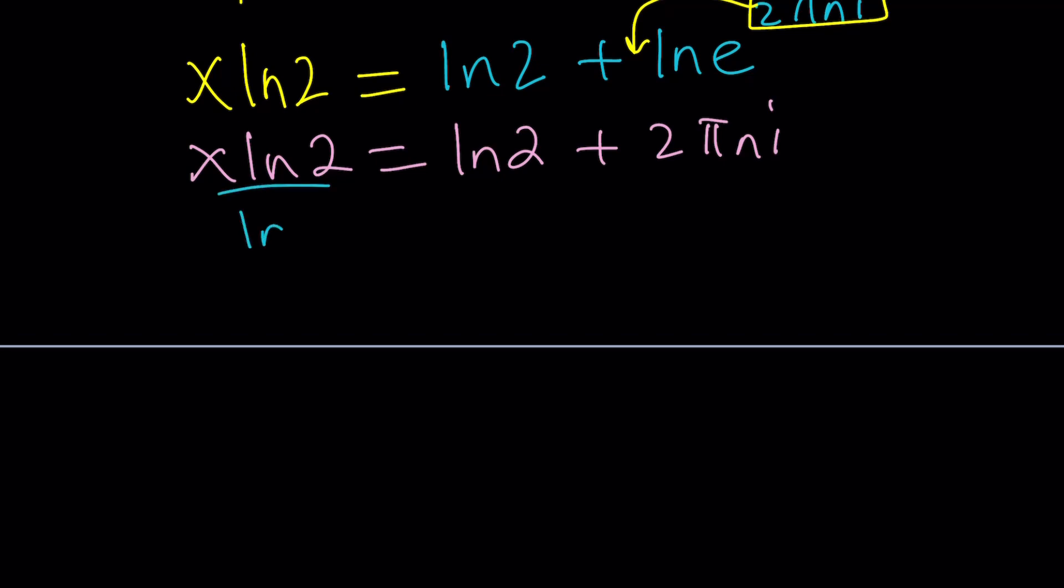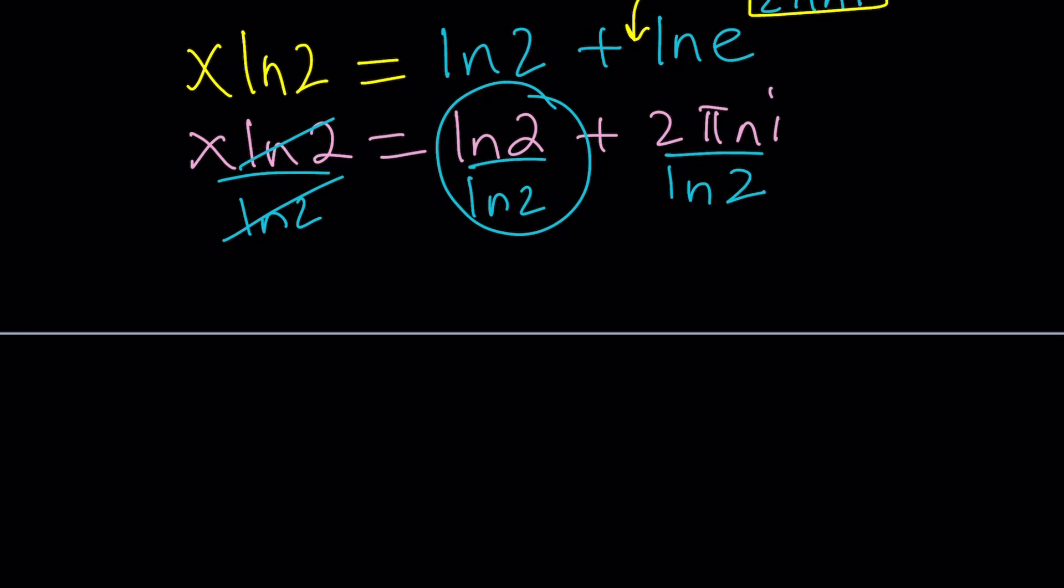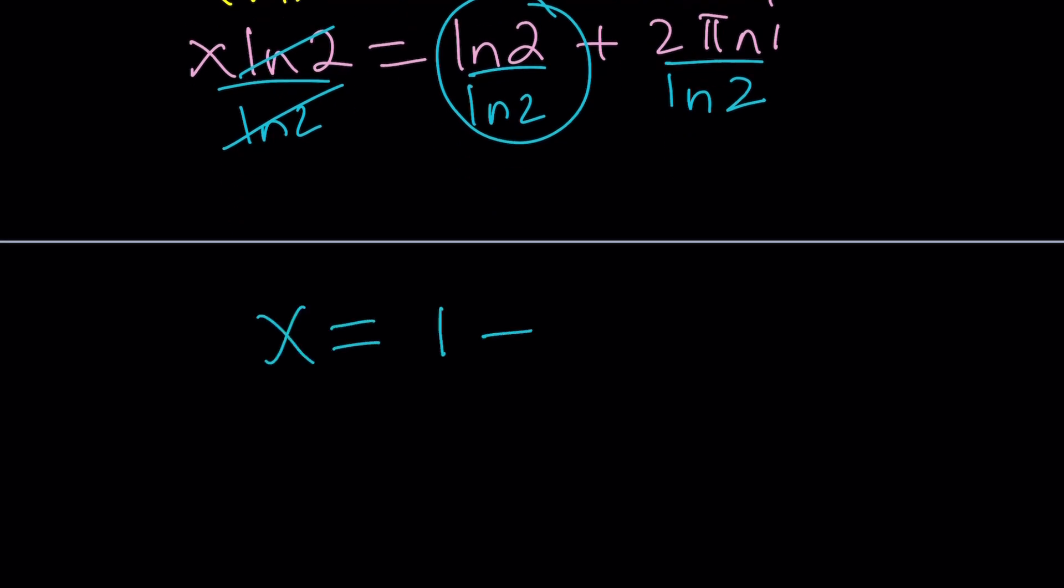And when we do, actually, we're going to get something nice because ln2 divided by ln2 is equal to 1. Does that ring a bell? Let's see. ln2 is going to cancel out here. x equals 1 plus 2 pi n over ln2 multiplied by i.